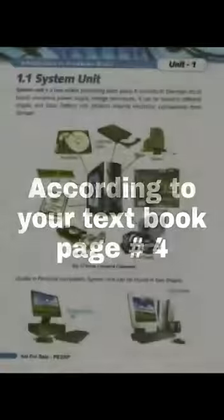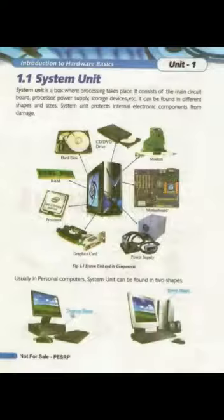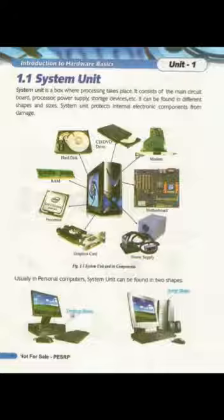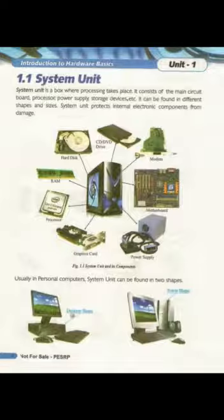Screen पर आपको system unit निले रंग में दिखाई दे रहा होगा. System unit is a box where processing takes place. It consists of the main circuit board, processor, power supply, storage devices, etc.